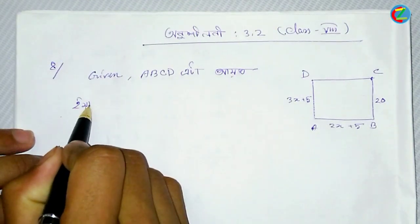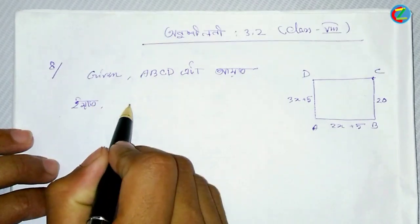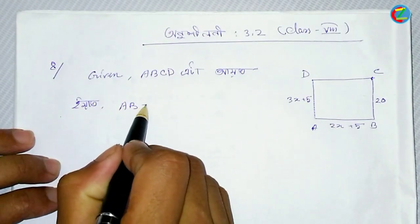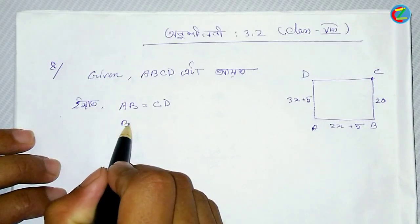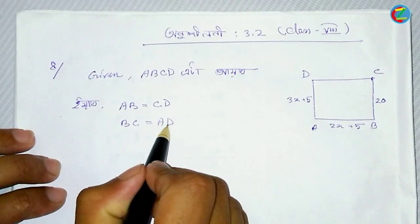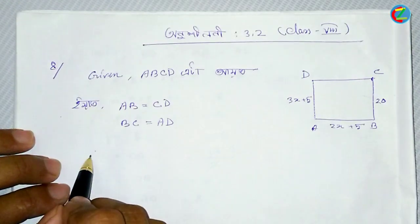So we are going to show you how to do this. A, B is equal to C, D. This is how to do this.